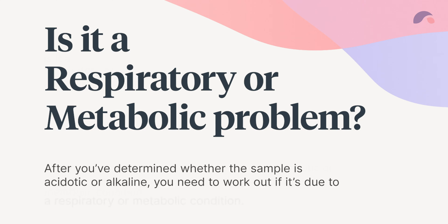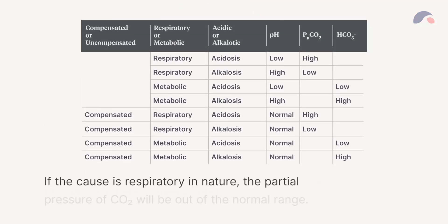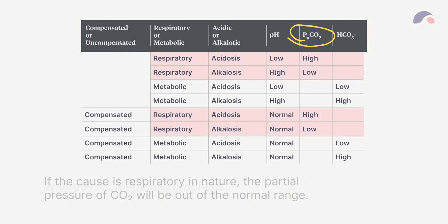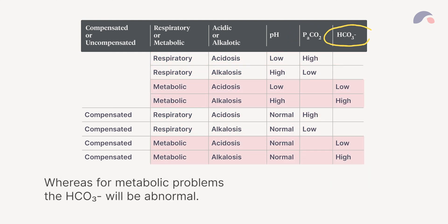After you've determined whether the sample is acidotic or alkaline, you need to work out if it's due to a respiratory or metabolic condition. If the cause is respiratory in nature, the partial pressure of CO2 will be out of the normal range, whereas for metabolic problems, the HCO3 negative will be abnormal.